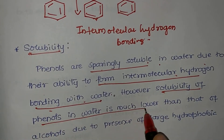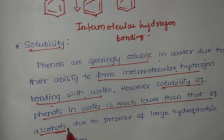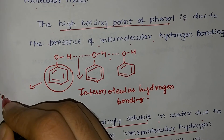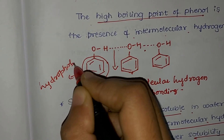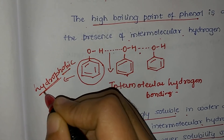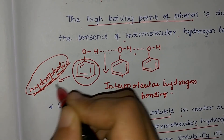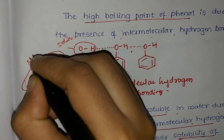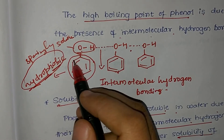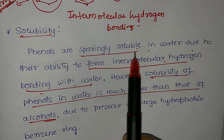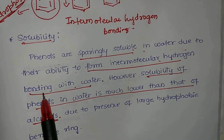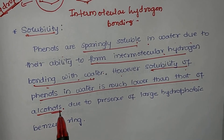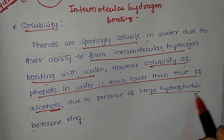However, the solubility of phenol in water is much lower than that of alcohols. This is due to the presence of the benzene ring, which is a hydrophobic group — meaning it resists dissolving in water. The OH part is soluble in water, but the large hydrophobic benzene ring is not. Hence, phenol is only sparingly soluble in water.